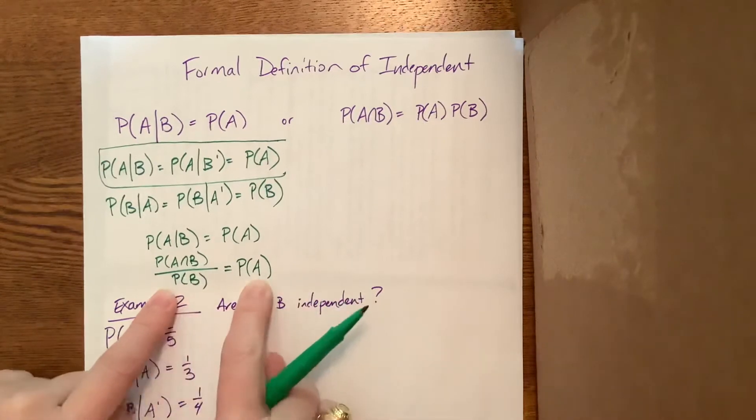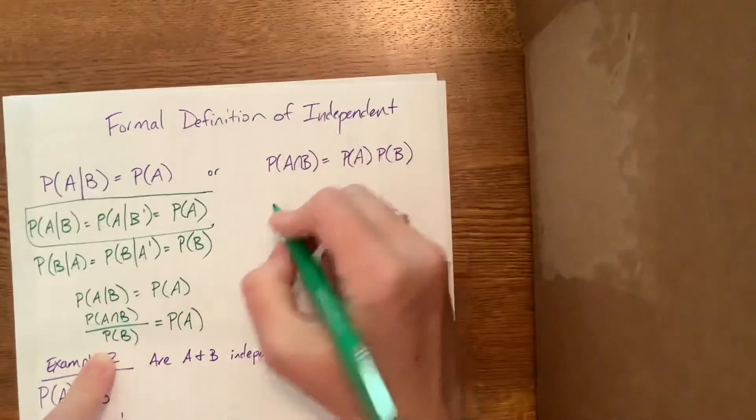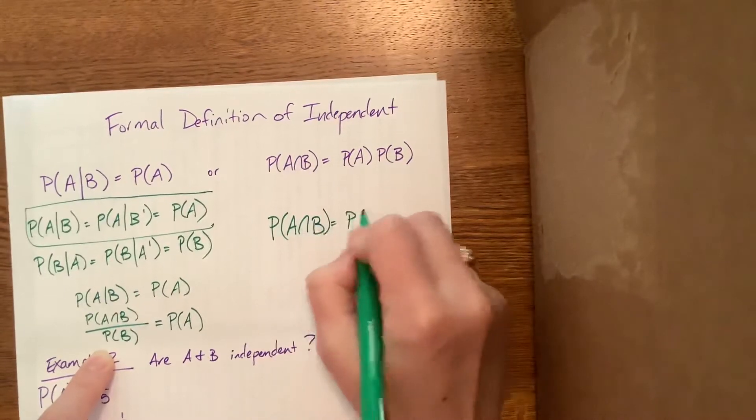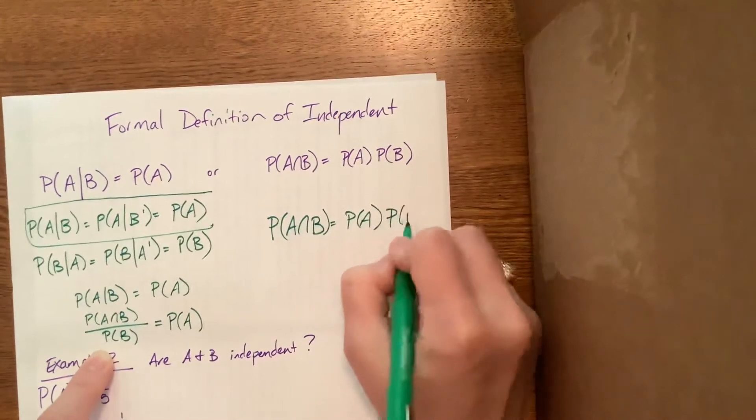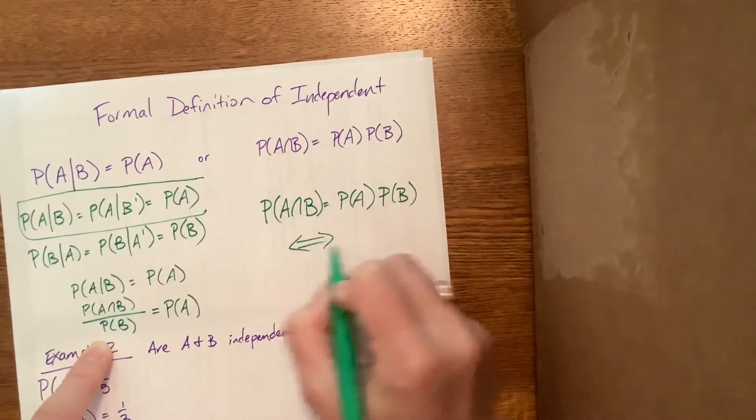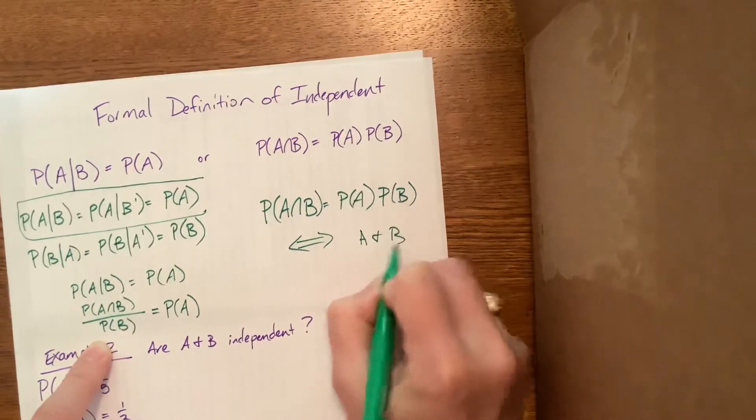If I multiply both sides by the probability of B, what I find is the probability of A intersecting B is equal to the probability of A times the probability of B.